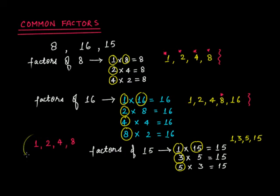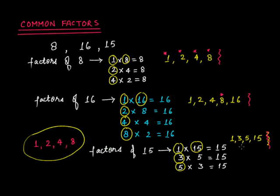Now, 1, 2, 4, and 8 were the common factors when we just had 8 and 16. But now we have a third number, 15, with factors 1, 3, 5, and 15. The common factors must appear in all three lists. Checking, only 1 is present in all three lists — no other number appears in all three. So the common factor of 8, 16, and 15 is just 1. I hope the concept of common factors is now clear. Thanks for watching.